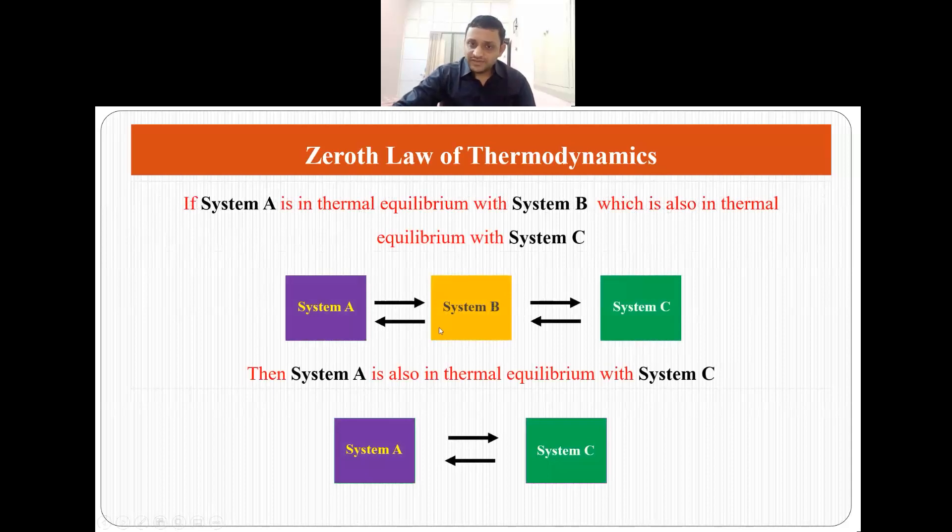For example, suppose you have a system A which is in thermal equilibrium with system B and this system B is also in thermal equilibrium with system C. Then system A and system C are in thermal equilibrium. This is what we mean by zeroth law of thermodynamics.